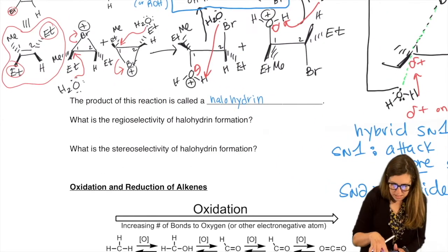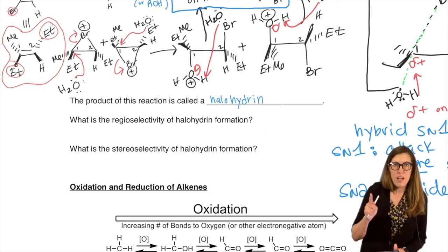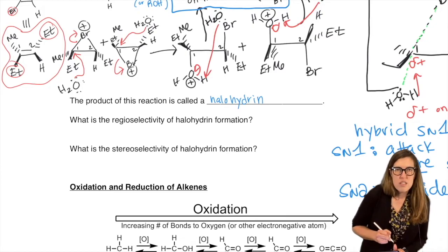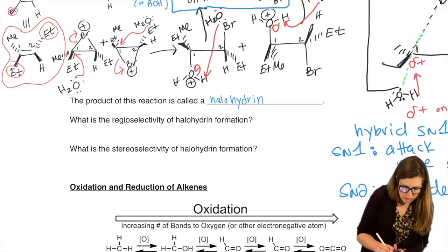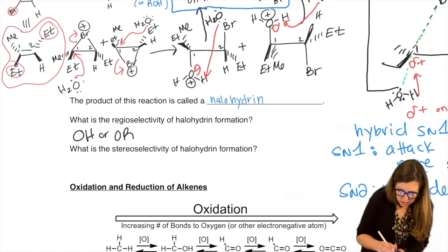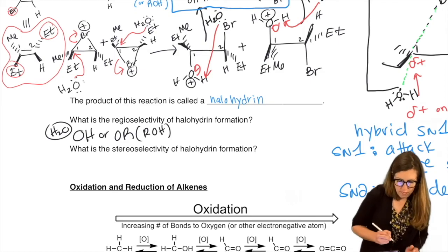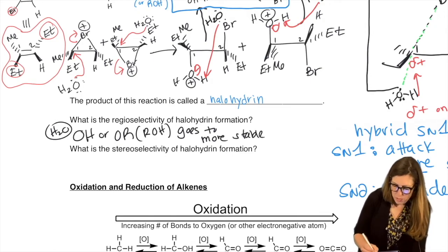Okay, so let's summarize that again. Regioselectivity would be described as: the nucleophile got added to the more substituted carbon. So it's like a Markovnikov arrangement, right? OH or OR - so if you use water, you add an OH; if you use alcohol, you add an OR. It goes to the more stable, what would be the more stable carbocation. That's a good way to remember it because that's remembering why.